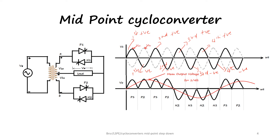During the third positive half cycle of the input supply, point A is going to be positive and B is negative. So during that time if N2 is given the triggering pulse, then the current flow will be from the midpoint of the transformer, through the load, through N2, back to the supply. During the third positive and negative cycles, the current flow in the load is from left to right. By operating N2 and N1 during the fourth positive and fourth negative half cycles, we get four negative halves of the output frequency, and the average is one negative half of the output frequency.